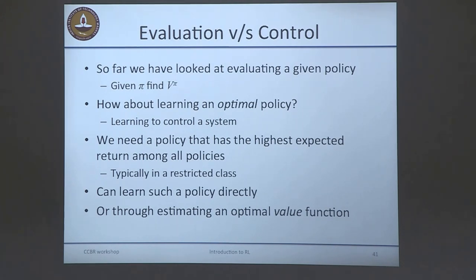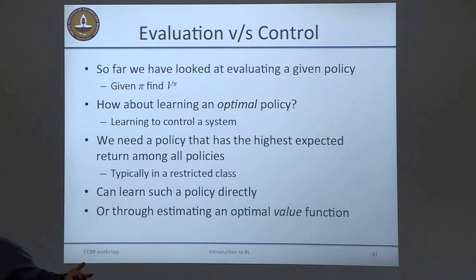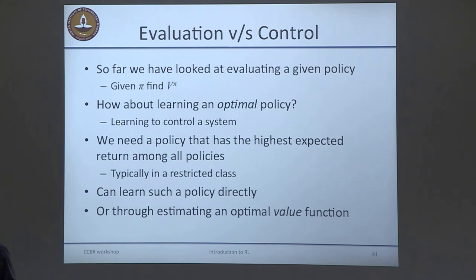Peter was essentially saying: you start with a guess for a policy, use TD learning to evaluate it and find V^pi, then change your policy to go to states with higher value than before. Starting with a uniformly random policy — taking left or right with probability 0.5 — you evaluate it, then improve it by going to states with higher values. You keep iterating this until you converge to a policy that doesn't change. This process is called policy iteration, and it's essentially learning to control the system — that's why we call it the control problem.